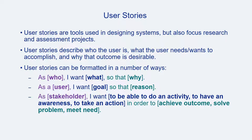User stories can be formatted in a variety of ways. Typically, one of the following three structures are used. First: as a [who], I want [what], so that [why]. Or: as a user, I want some goal, so that [reason]. Or: as a stakeholder, I want to be able to do an activity, have an awareness, or take an action, in order to achieve an outcome, solve a problem, or meet a need.